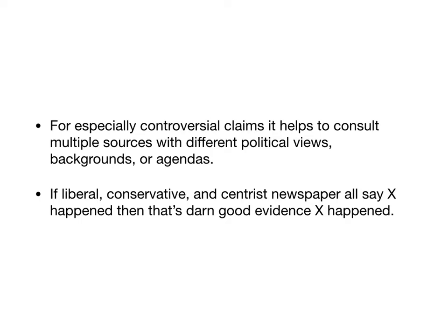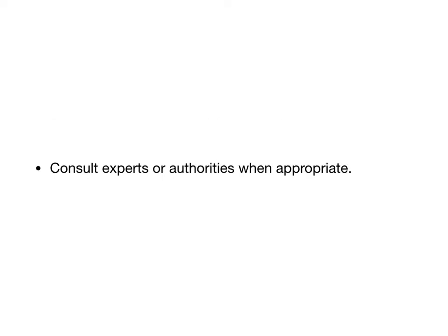The New York Times is a pretty liberal paper, the Wall Street Journal is moderately conservative, and USA Today is a centrist one. If you want to know whether X really happened the way they said it did, and the New York Times, Wall Street Journal, and USA Today all say yes it happened that way, that's really good evidence — you have multiple sources from different perspectives and different agendas. You should also consult experts or authorities when appropriate, and it helps to consult authorities with different political views or agendas.